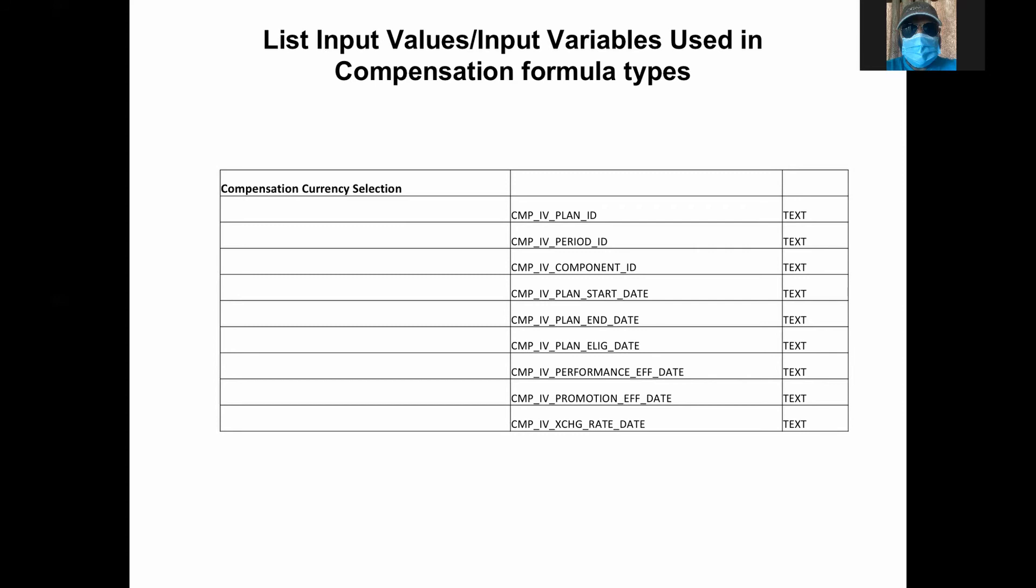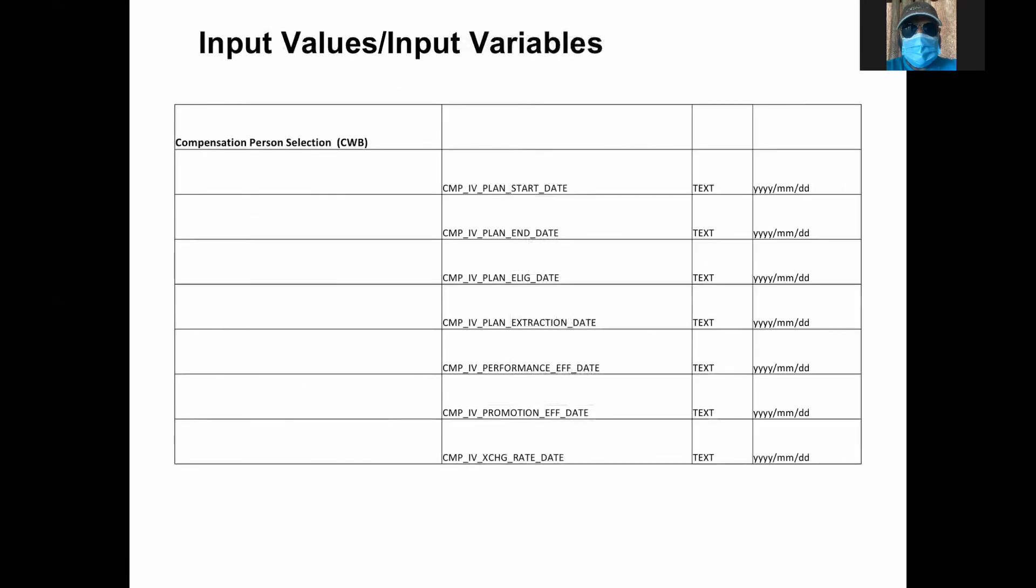The compensation currency selection is the type of fast formula. These are the things passed, mostly the past date. Passed as text. The dates are passed in YYYY/MM/DD format. Now, let me see the other example, compensation person selection. This is a very common fast formula type which is used by CWB workbench, TCS total compensation statement, and GSP grade step progressions.